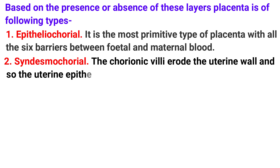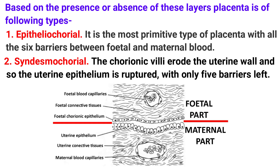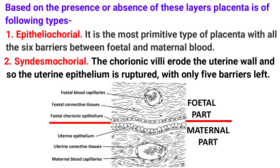The second type is syndesmochorial. The chorionic villi erode the uterine wall, so the uterine epithelium is ruptured, leaving only 5 barriers. The chorionic villi that form from the fetal chorionic epithelium attach to the uterus and erode the uterine epithelium. With uterine epithelium ruptured, only 5 barriers remain. Examples of syndesmochorial placenta are sheep and cow — mostly ruminants.